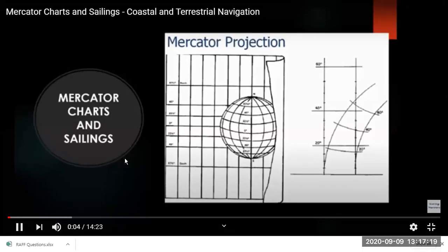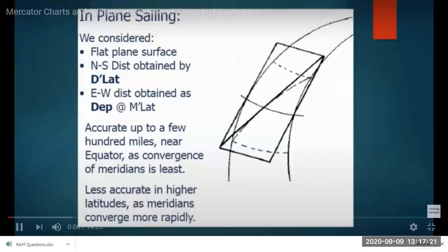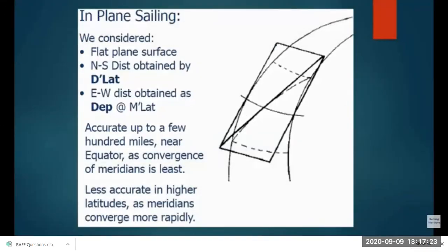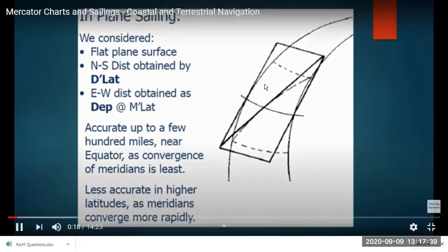Today we are going to start with Mercator chart projection. In plane sailing, we consider that the earth is a flat surface, not a spherical surface. That's why the north-south distance obtained is the D.lat. Because it's a flat surface, the difference in that is D.lat, and the east-west distance is departure, which is at the mean latitude.